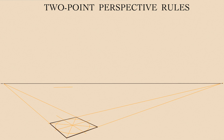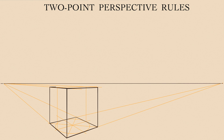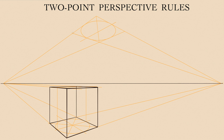Here is what you need to know about two-point perspective. It is one of 16 types of perspective. As its name suggests, there are two vanishing points in this type. A cube depicted in this perspective might have two or three sides visible, depending on the point of view.